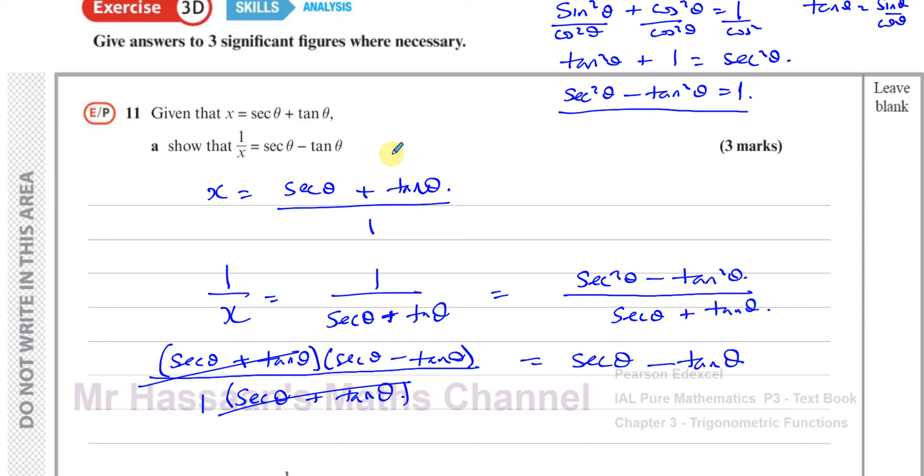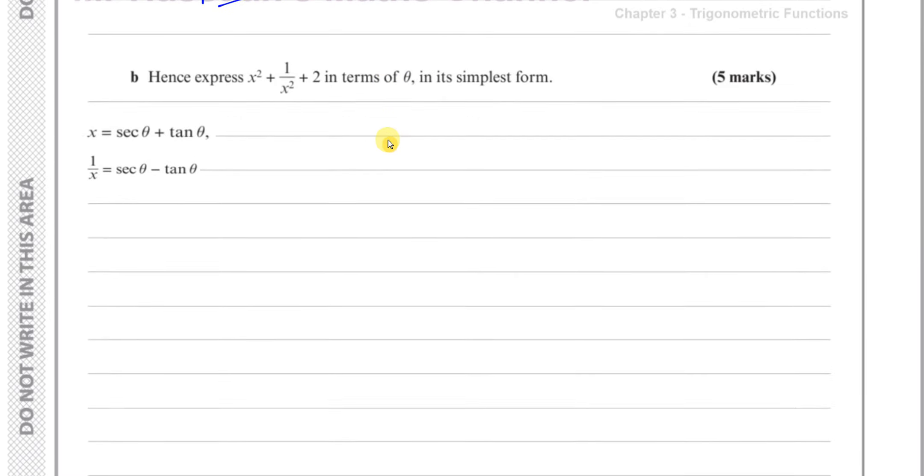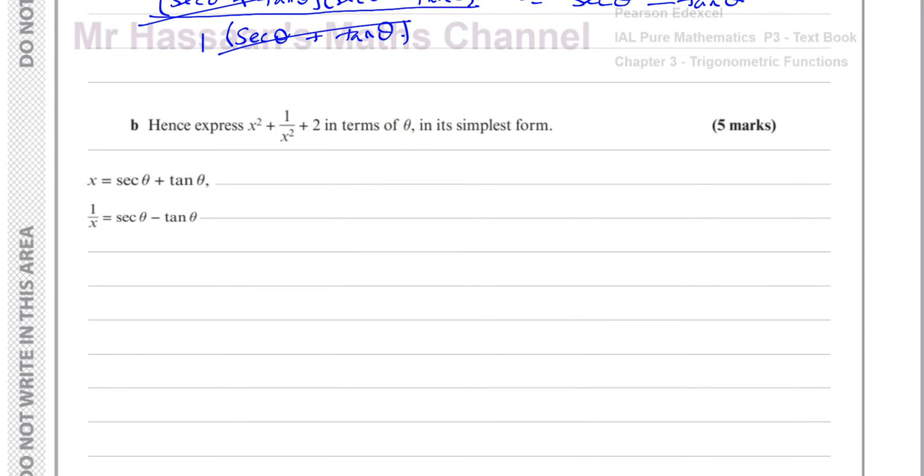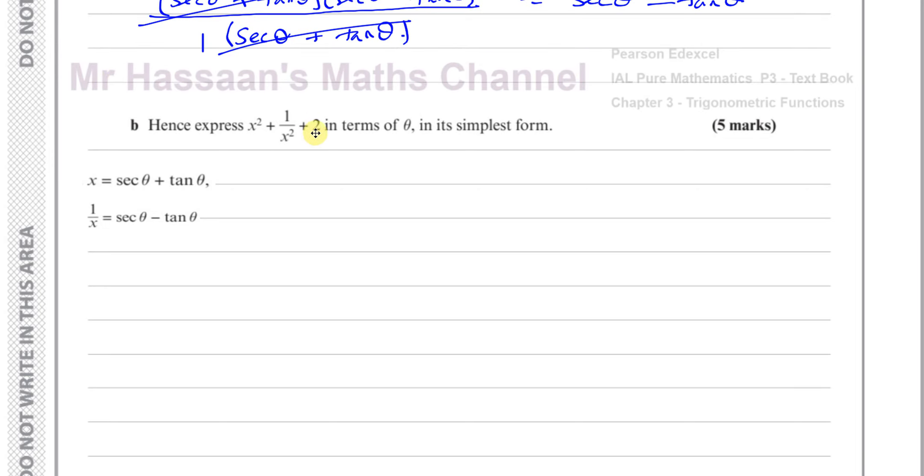Part B is just simply manipulating what we found and expressing x squared plus 1 over x squared plus 2 in terms of θ. So x squared is secant θ plus tan θ squared, and 1 over x squared is the same as 1 over x all squared. So we're going to add secant θ minus tan θ all squared, and then we've got plus 2 at the end. Let's expand this bracket, which will give us secant squared θ plus 2 times secant θ times tan θ plus tan squared θ.